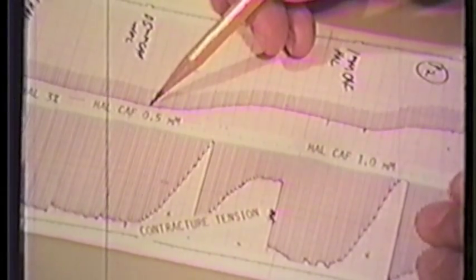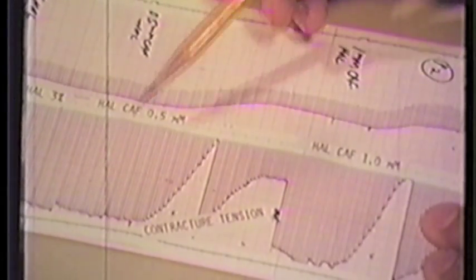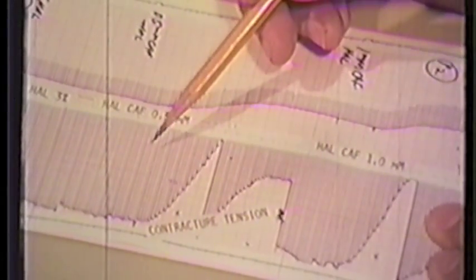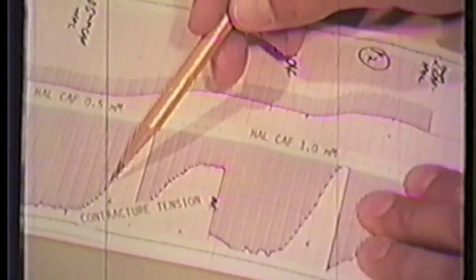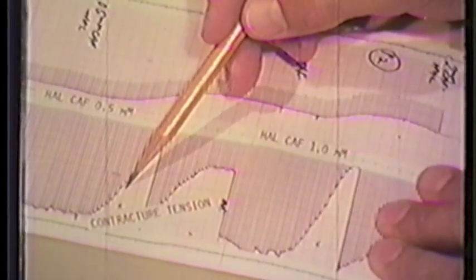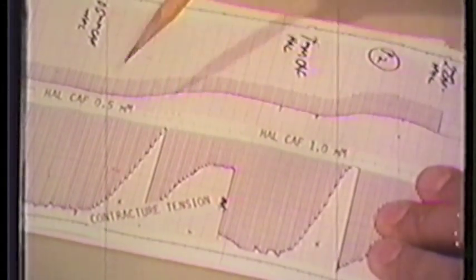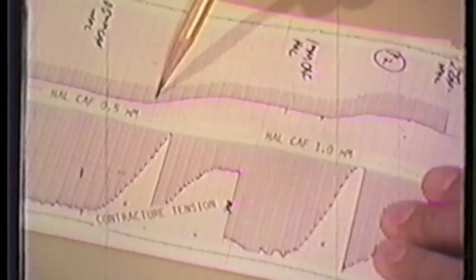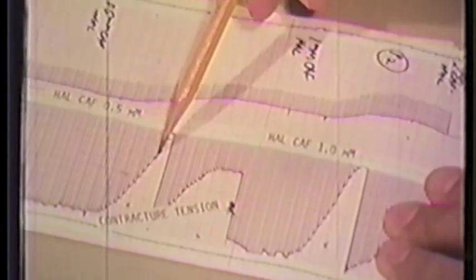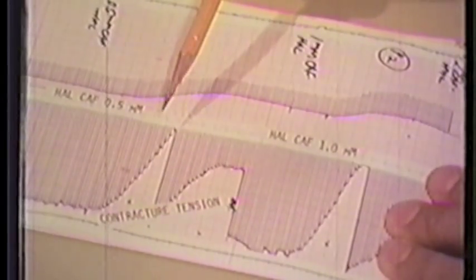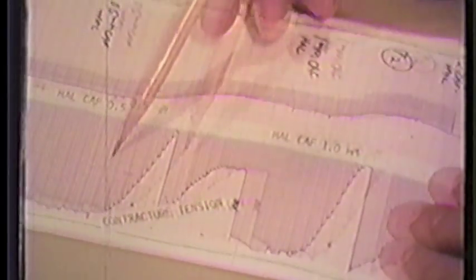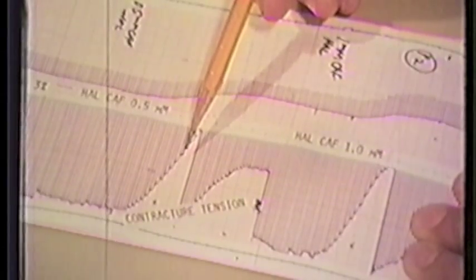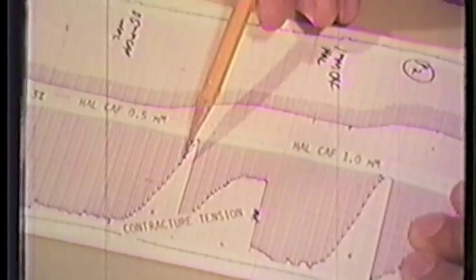Note that both twitch and contracture tension are monitored at high gain on the bottom trace and at lower gain in the upper trace. A change upward in the baseline indicated a contracture. A long vertical line shows increases in twitch tension. As the caffeine concentration is increased, one can observe the development of the contracture.